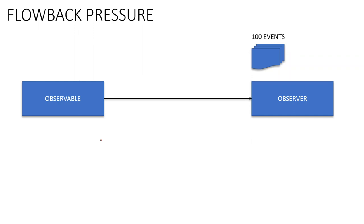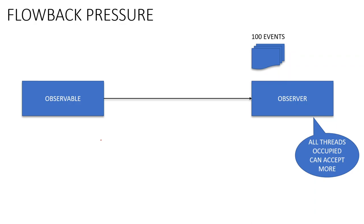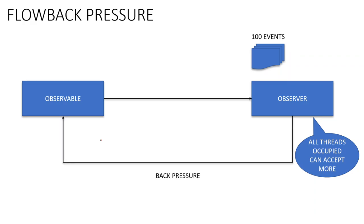We need a fault tolerance mechanism to handle this. The observer can signal that all threads are occupied and it cannot handle the remaining requests — the rate of sending is greater than the rate of consumption. So it pushes back pressure on the observable. In practice, if the observable is an HTTP listener in Mule, you will see a 503 error meaning the server is busy; in the case of JMS it will not send the acknowledgement message back. The benefit of flow back pressure is that it prevents the application from crashing or getting an out-of-memory error.